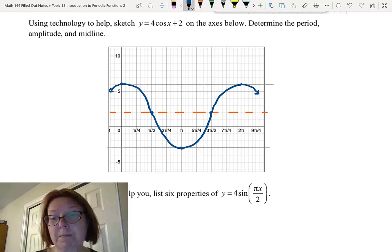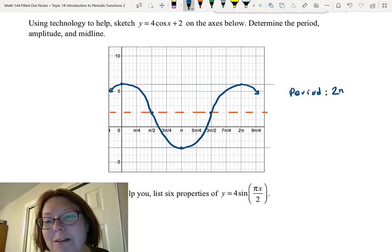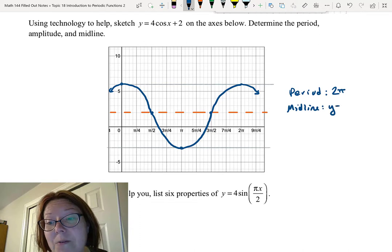So the period was 2 pi. That's the time it takes to go from maximum to maximum. It's also the time it takes to go from minimum to minimum.